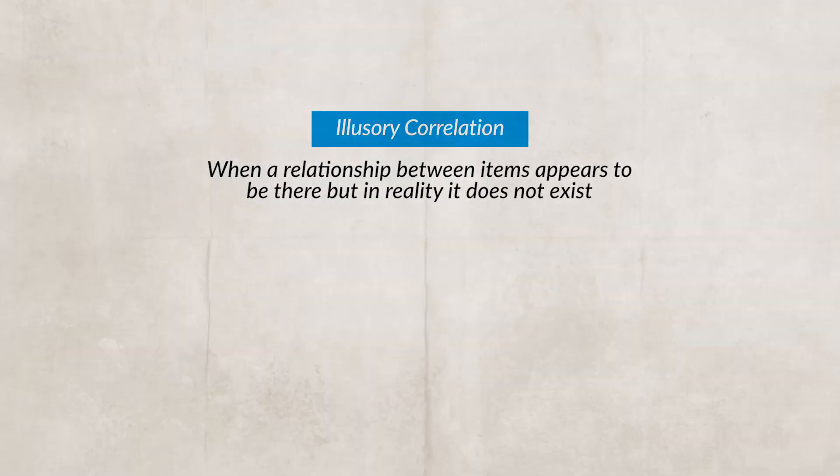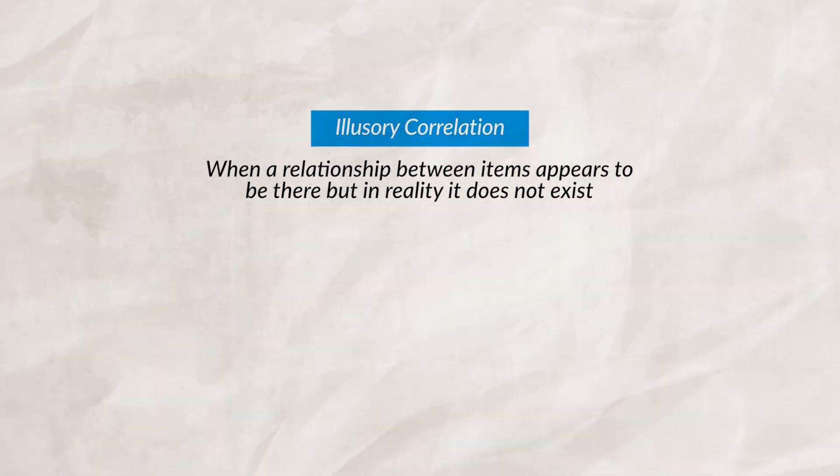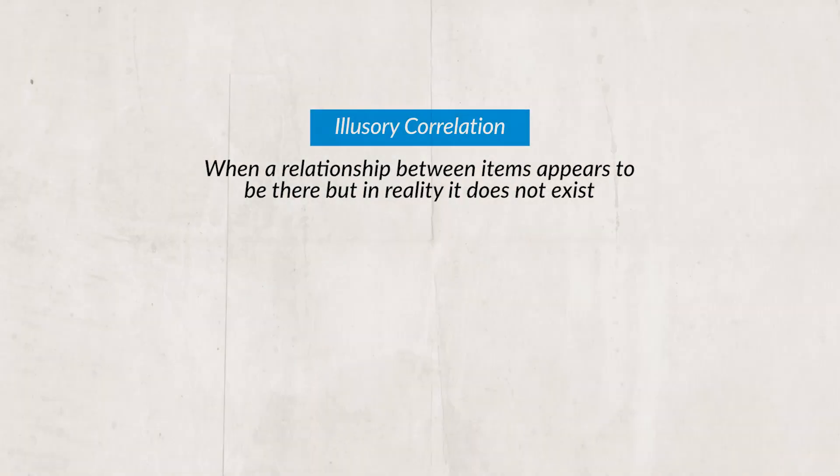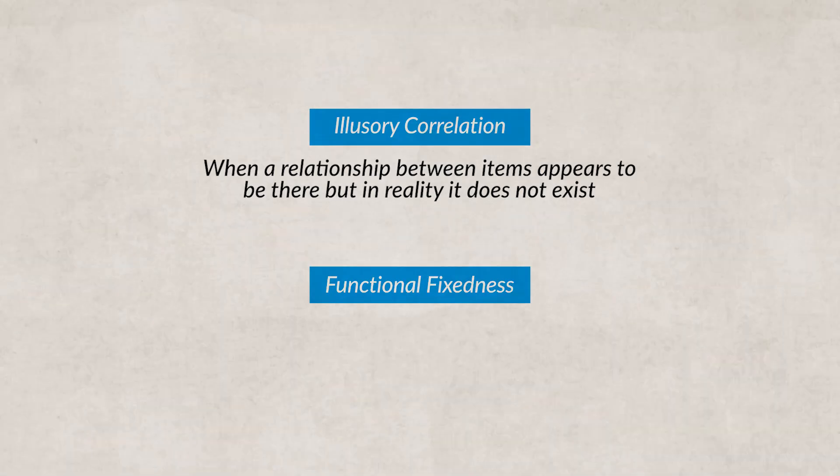For example, have you ever been in a discussion with someone about politics, and even though you presented them with multiple facts, statistics, and different examples to illustrate your point, the other person just refuses to change their mind or even acknowledge the facts you presented? That would be an example of belief perseverance. Two other concepts that cause errors in thinking are illusory correlation — when different events happen near each other and we instinctively think there must be a connection (remember, correlation does not equal causation) — and functional fixedness, when we see certain items only in a specific way. For example, a coin can purchase items, but I could also use it to scrape gum off a desk.